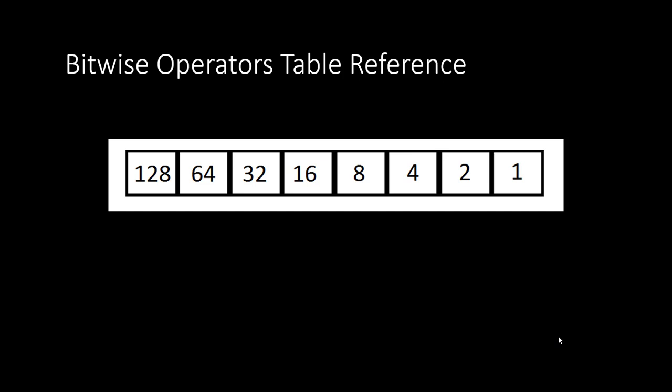What I've got here is a reference table of Bitwise Operators. It's represented in 8 blocks starting from 1 going all the way to 128. The values double by themselves: starting with 1, then 2, 4, 8, 16, 32, 64, and 128. As each number goes from right to left, it's doubling and increasing.